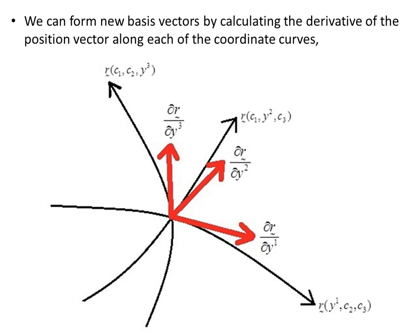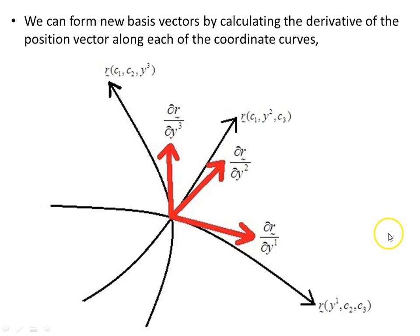We can form new basis vectors by calculating the derivative of the position vector along each of the coordinate curves. So our first basis vector is dr/dy1 pointing in this direction, dr/dy2 in this direction, dr/dy3 in this direction. These three vectors shown in red here form a basis for this space — they span the space and are not necessarily of unit length, but they form a basis for our space.